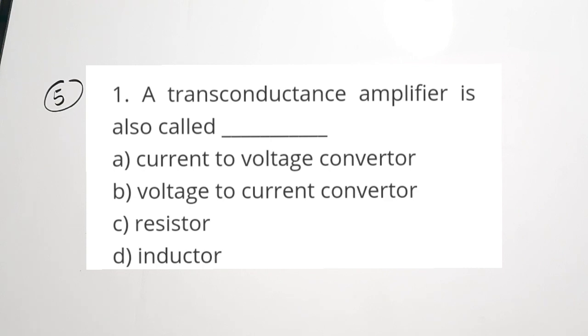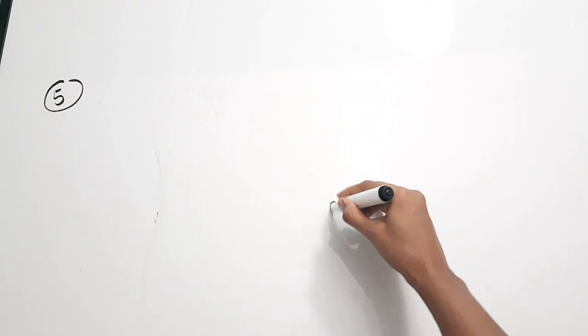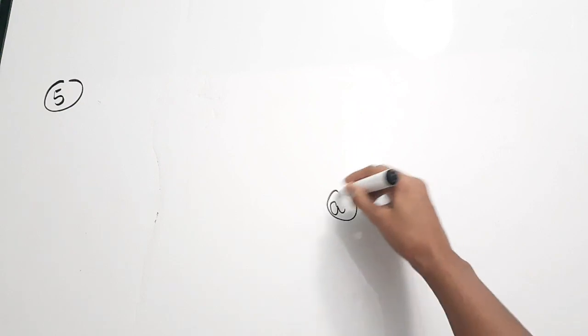Fifth question is from transconductance amplifiers. A transconductance amplifier is also called dash. Options: A, current to voltage converter; B, voltage to current converter; C, resistor; D, inductor. The correct answer is A — it is a current to voltage converter; it converts current to voltage. Correct answer for the fifth question is option A.